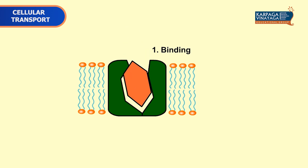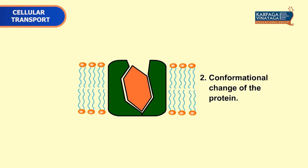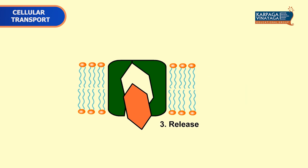This animation clearly shows how glucose permeates through transporters. First, glucose molecules bind to the transporter. Second, the transporter undergoes a conformational change from outer to inner. Third, the molecule is released from the transporter into the inside of the cell.